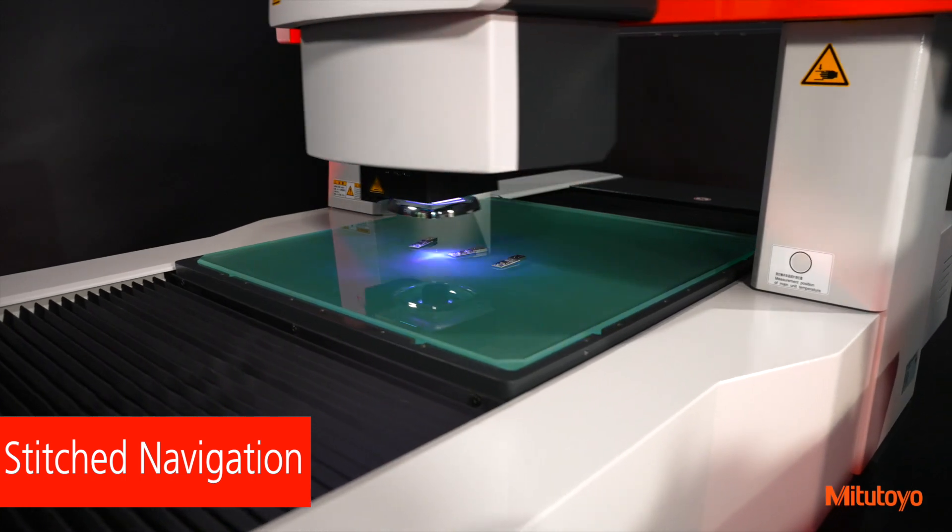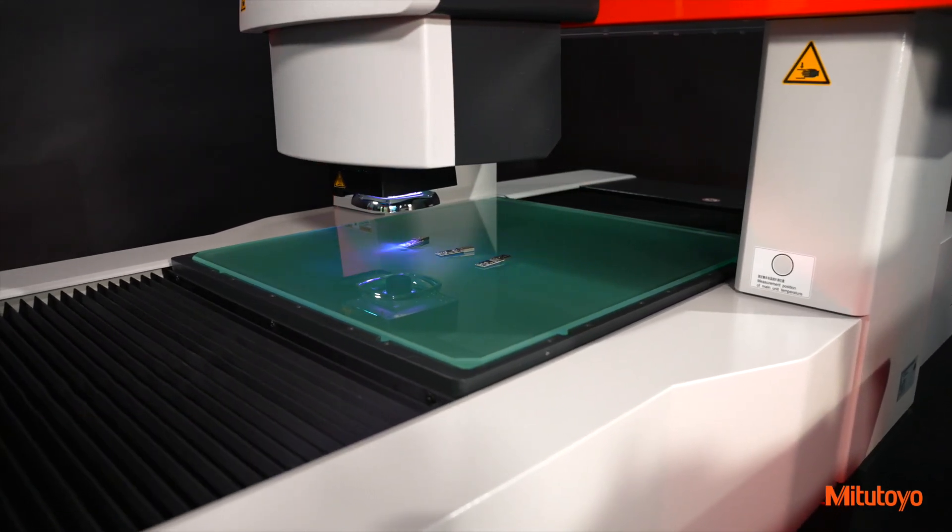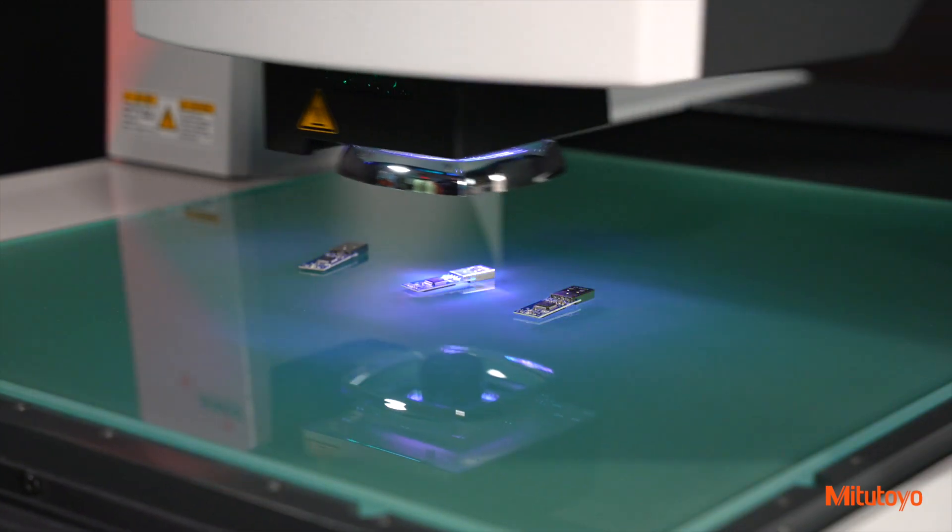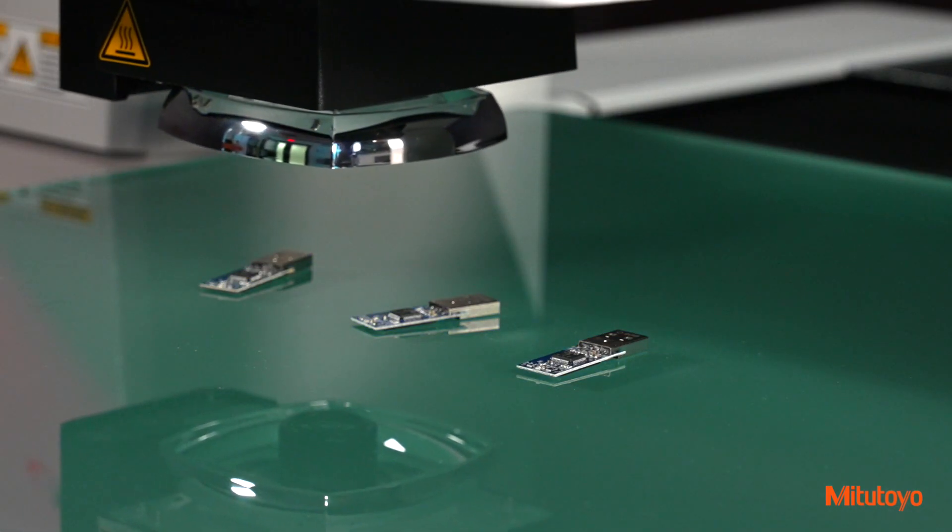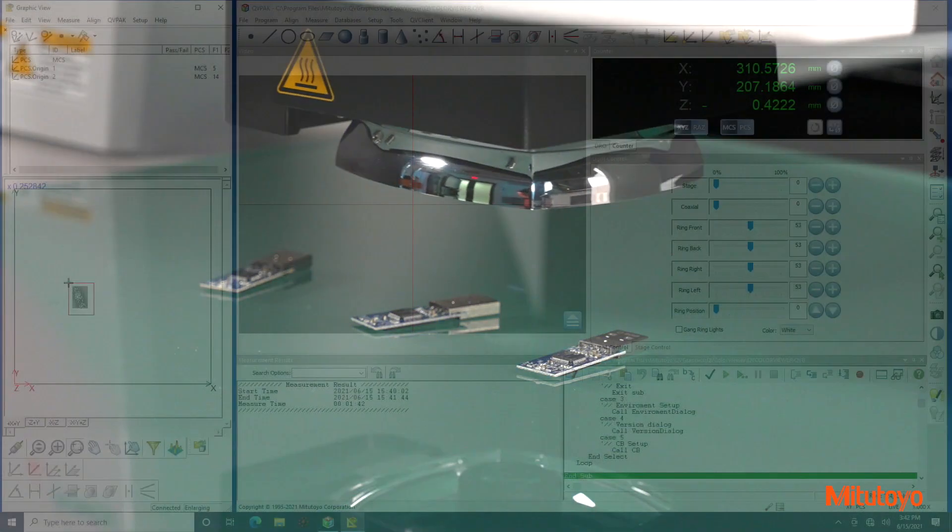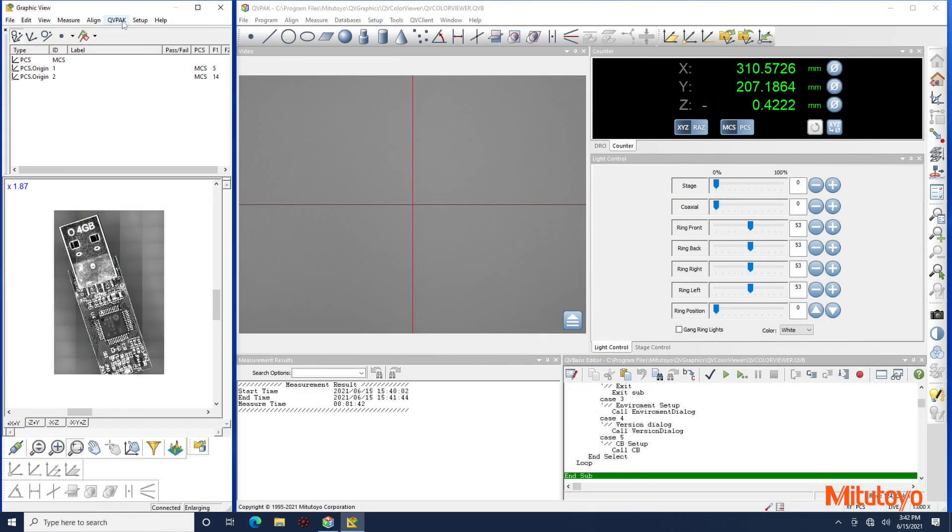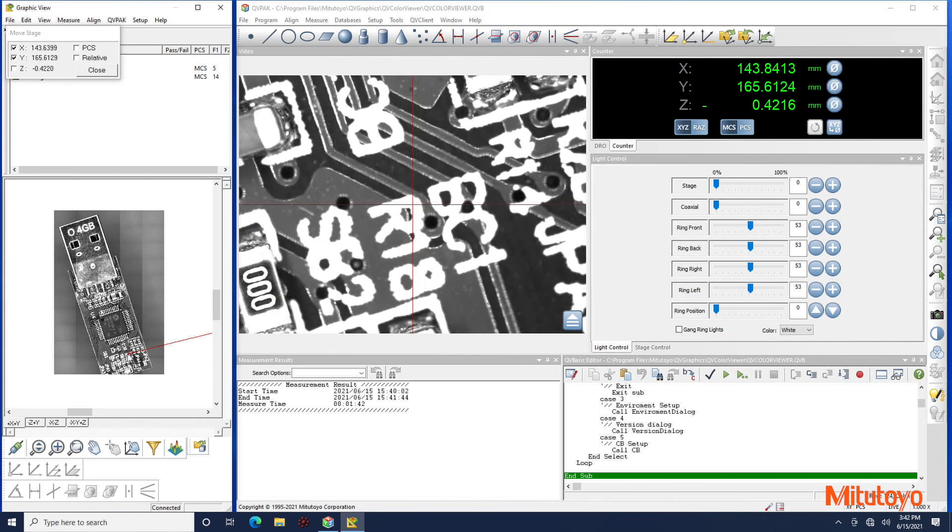This new programming aid stitches camera images together into a single large image displayed on the QVPAC software. This stitched image is flexible enough to consist of a single large part or multiple parts. Stitched navigation can then be used to quickly navigate to desired measurement features.